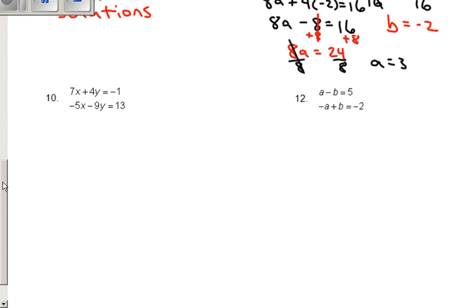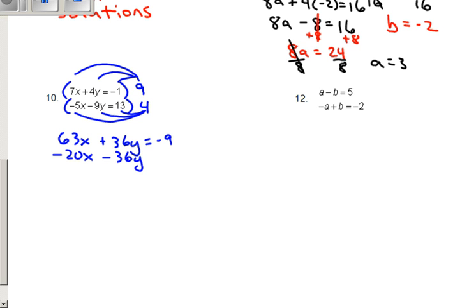So in this case, I'm going to go ahead and multiply the top equation by, let's say, 9. I'm going to work with the y's. I'm going to multiply the bottom equation by 4. Now, I don't have to multiply by negatives because I already see my y's. One's negative and one's positive. So when I go ahead and distribute these in, I get 63x plus 36y equals negative 9. On the bottom equation, I get negative 20x minus 36y equals 52.